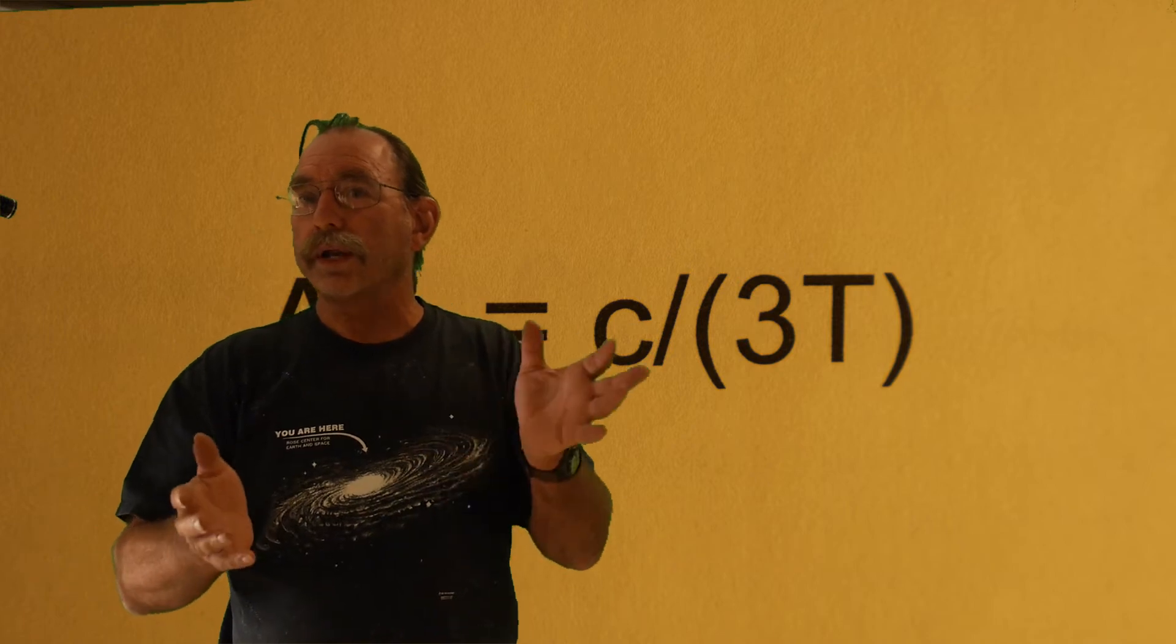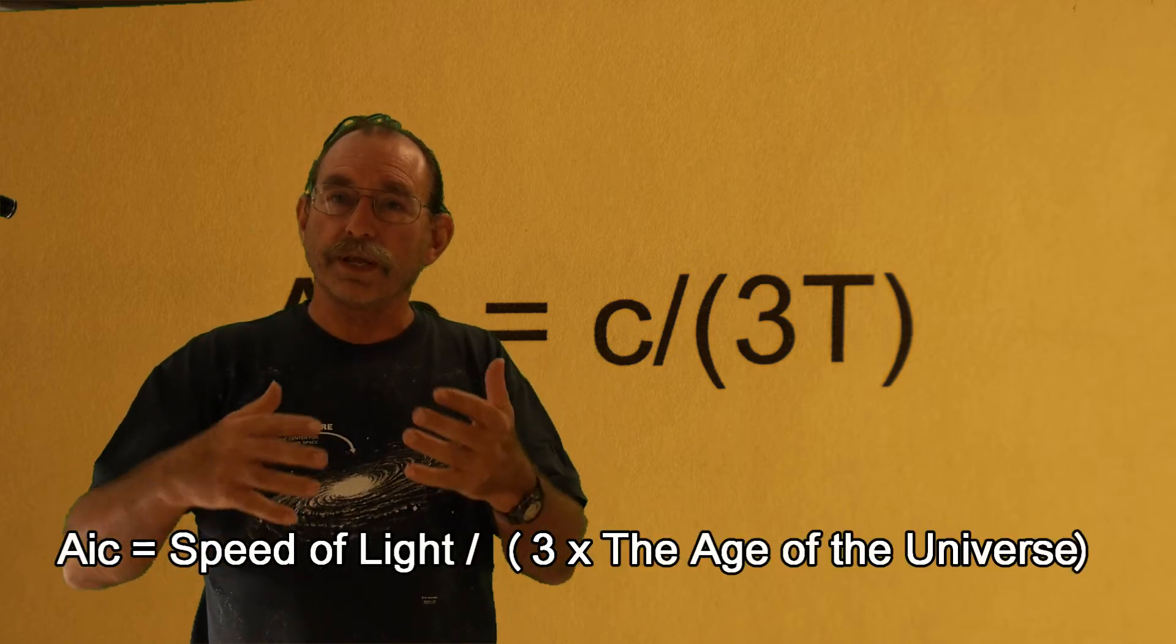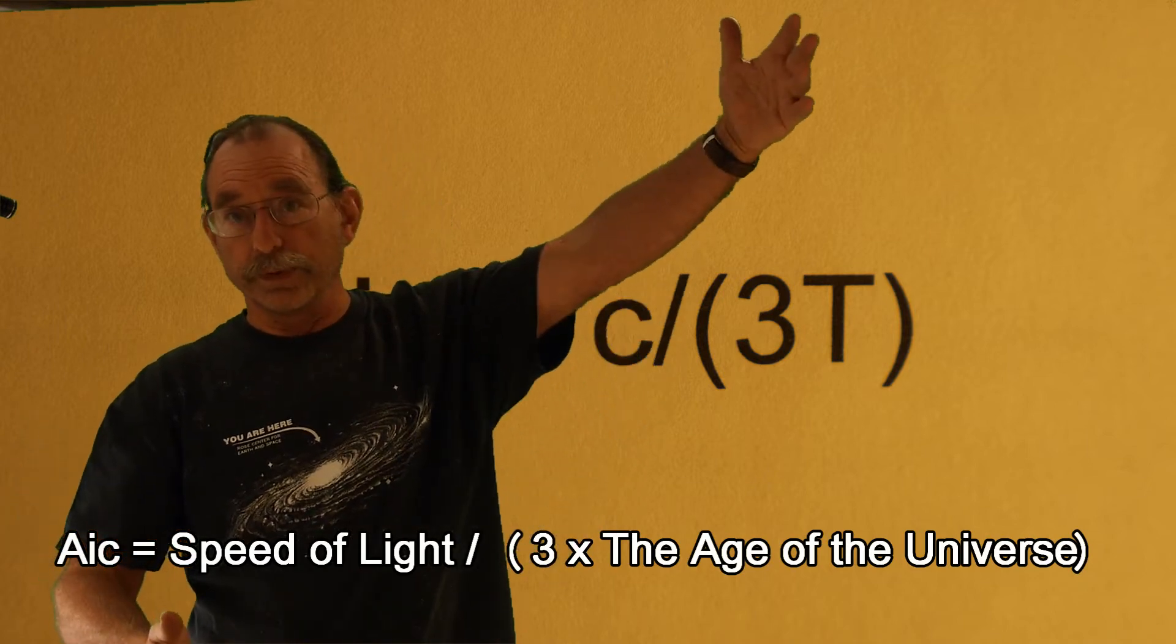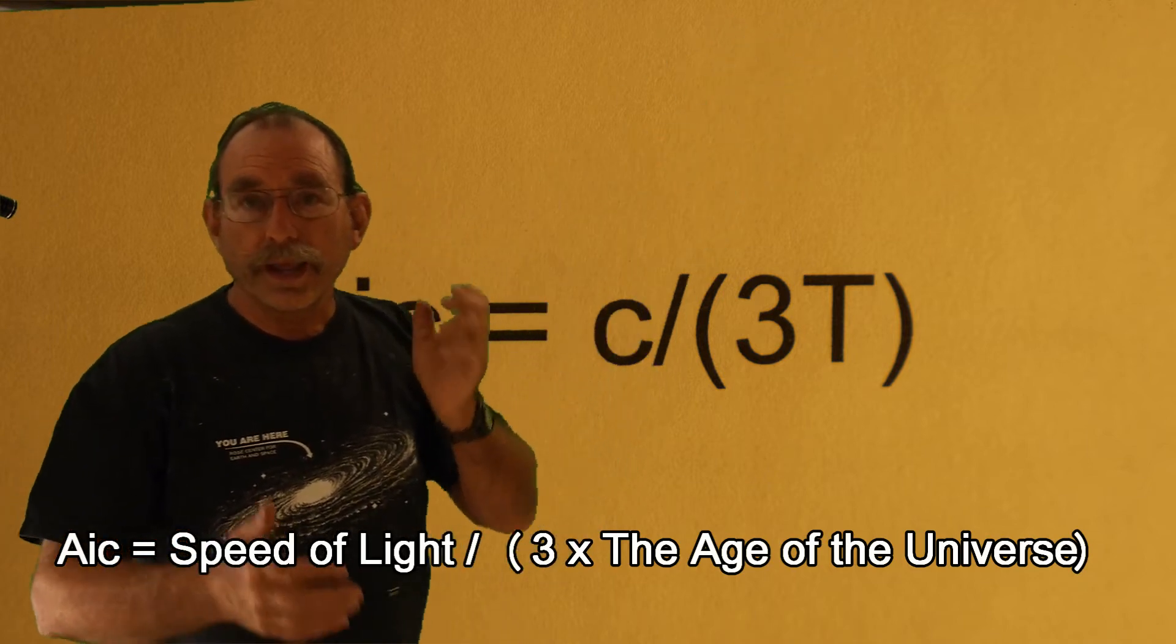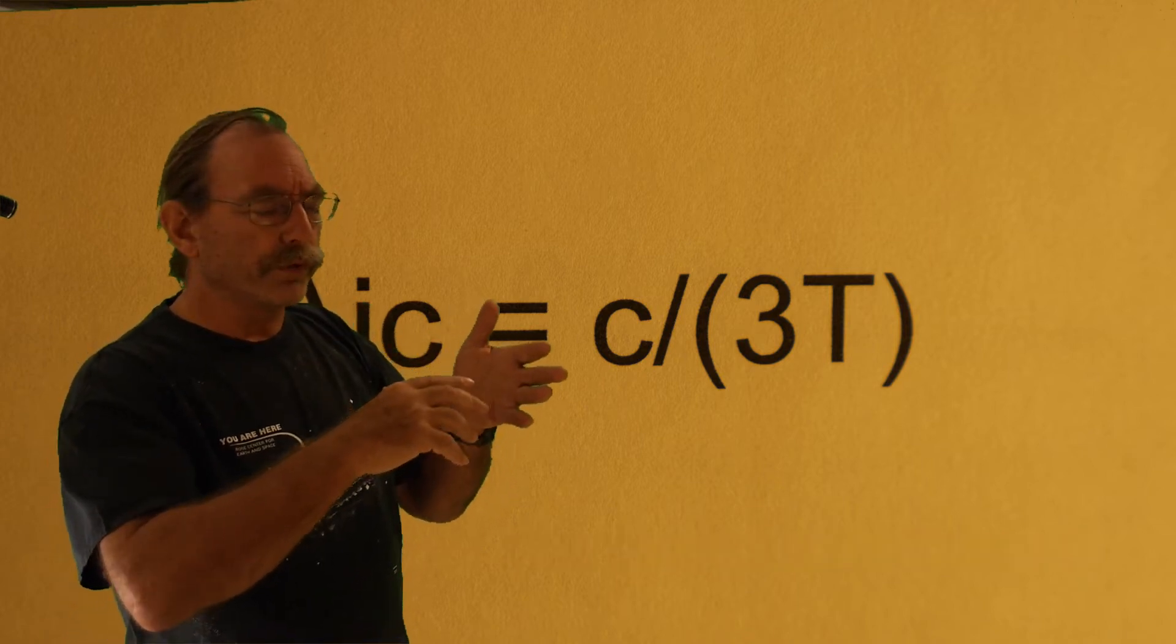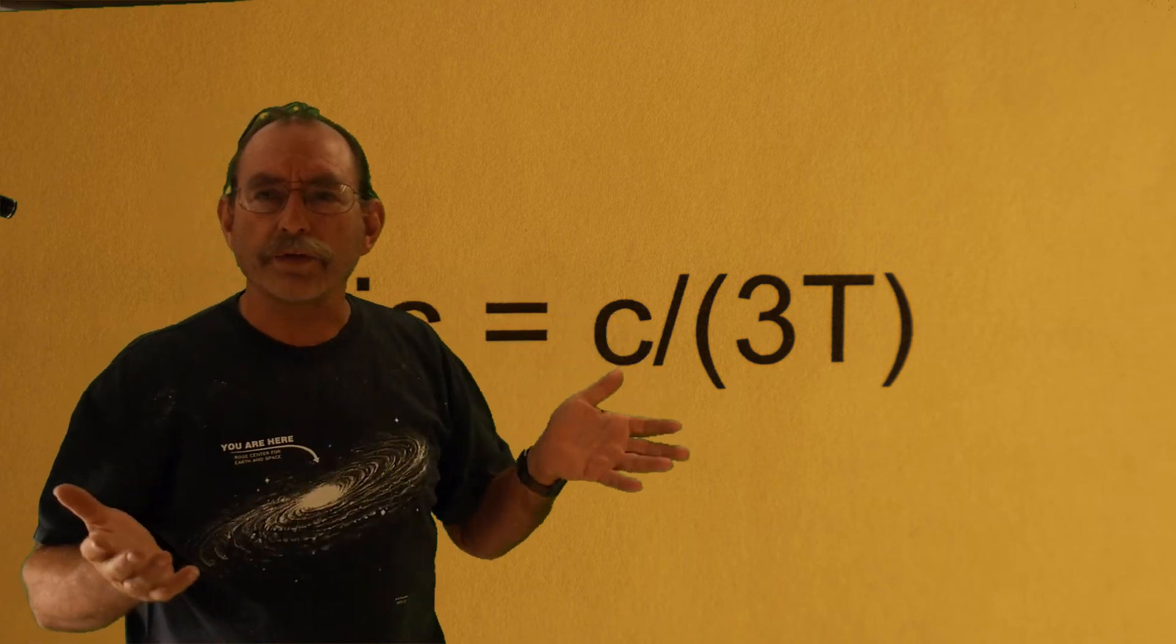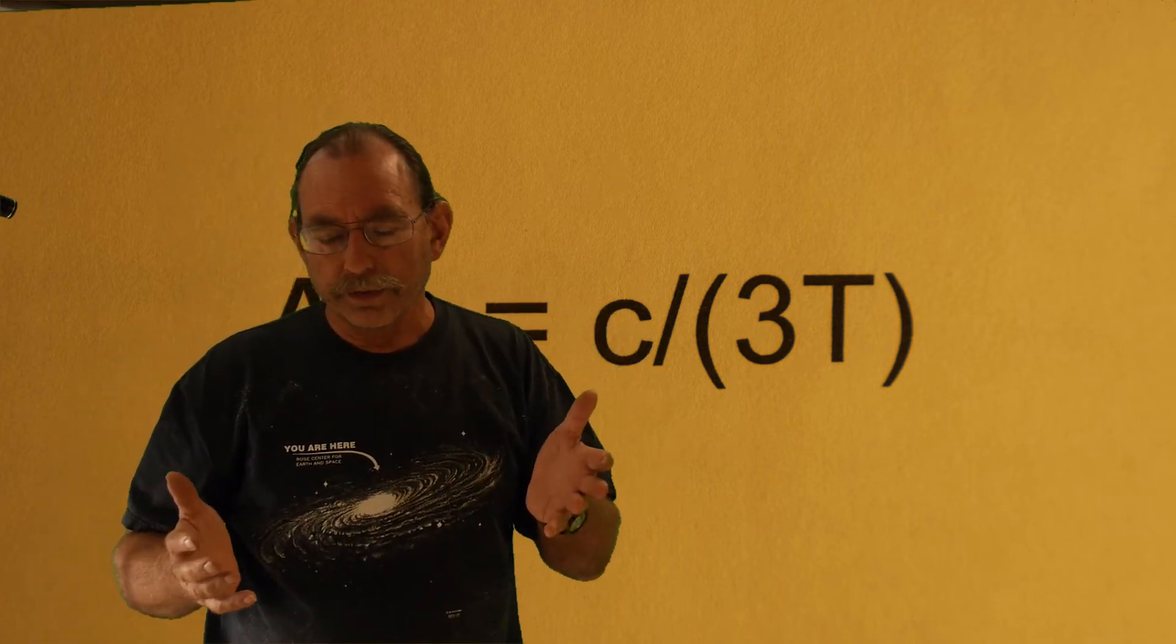So this model does not need dark energy, nor does it need dark matter to explain the relationships we see in galaxies as we observed them in the past. Dark matter was initially proposed to exist because it appeared that galaxies were rotating too fast to be bound together.